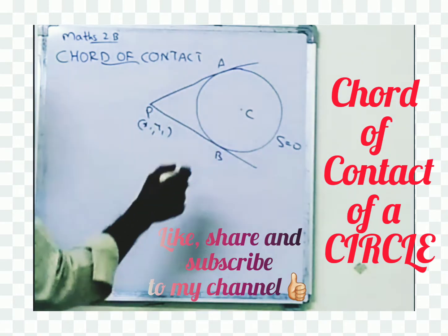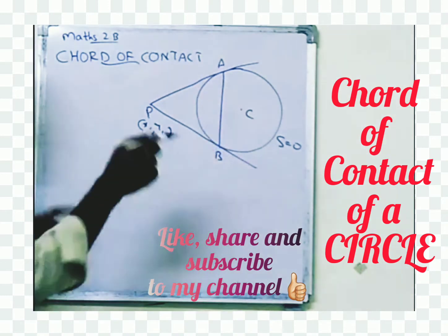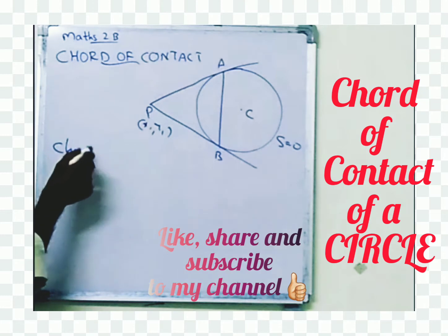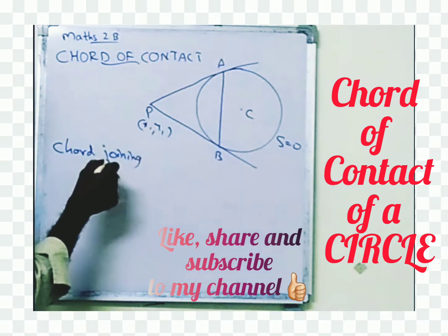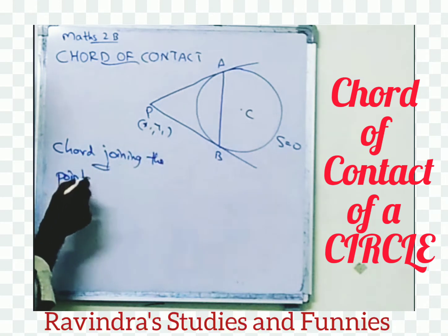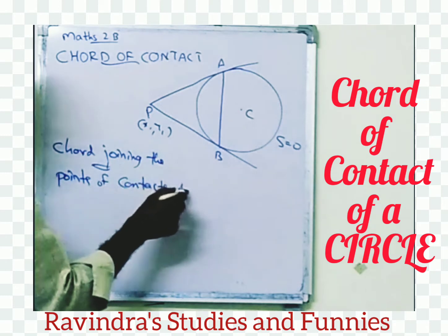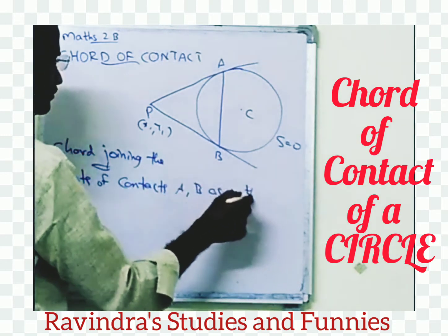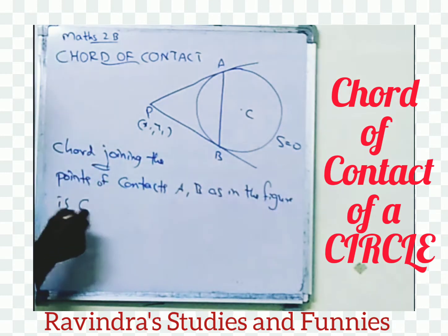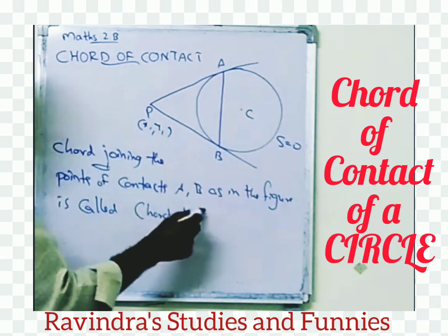If you draw a line segment joining these two points A and B, it is a chord — a chord joining the points of contacts A and B. As shown in the figure, this is called the chord of contact.